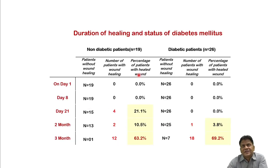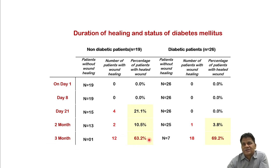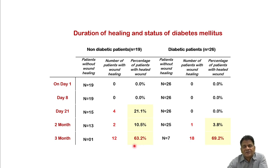Of the 45 patients, 19 were non-diabetic and 26 were diabetic. In non-diabetic patients, 21.1 percent healed by 21 days, and about 31 percent by two months. In diabetic patients, only one case (3.8%) healed at two months, but by 90 days, 63.2 percent of non-diabetics and 69.2 percent of diabetics had healed. There was a delay in healing with diabetes, but ultimate healing was good, and success rates between groups were not statistically significant.